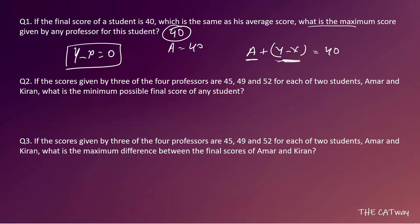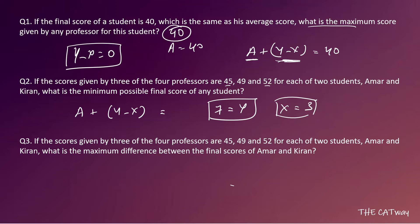Question two: if the scores given by three of the four professors are 45, 49, and 52 for each of students Amar and Kiran, what is the minimum possible final score of any student? The final score is A plus Y minus X. The maximum difference Y between these three scores is 52 minus 45 equals 7. The minimum difference X from these three scores is 3. To minimize the final score, we want to maximize X while keeping Y fixed at 7, so the fourth score should stay within the range 45 to 52.